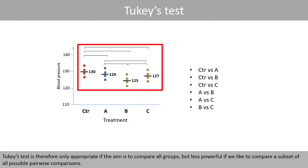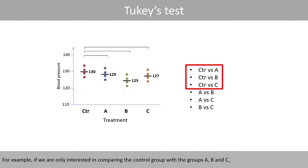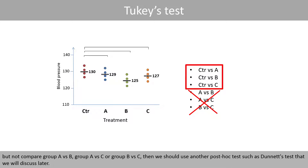Tukey's test is therefore only appropriate if the aim is to compare all groups, but less powerful if we want to compare a subset of all possible pairwise comparisons. For example, if we are only interested in comparing the control group with groups A, B, and C, but not comparing group A versus B, group A versus C, or group B versus C, then we should use another post-hoc test, such as Dunnett's test, which we'll discuss later.